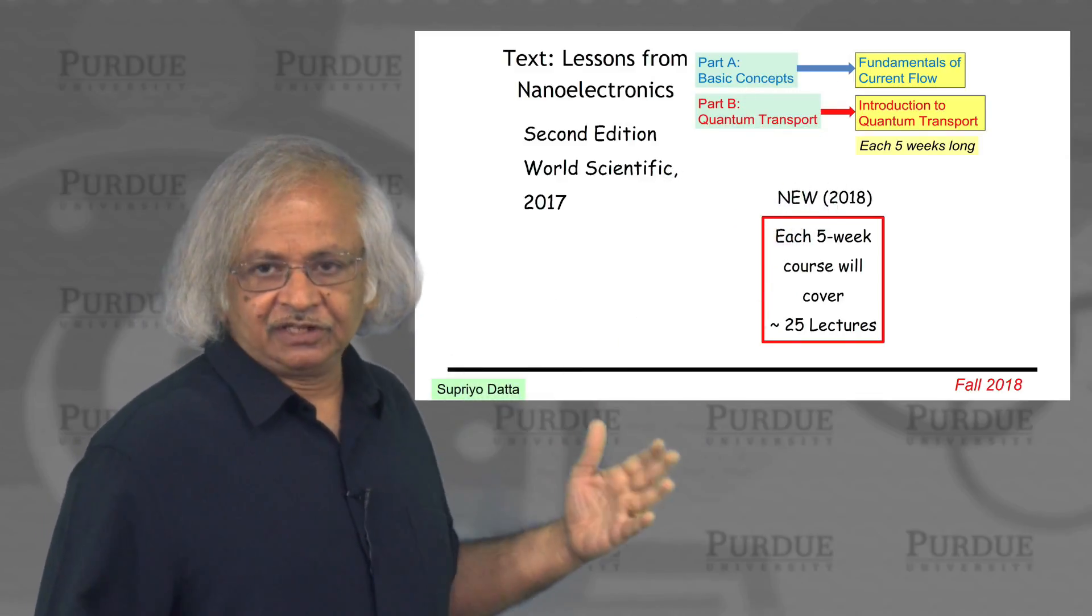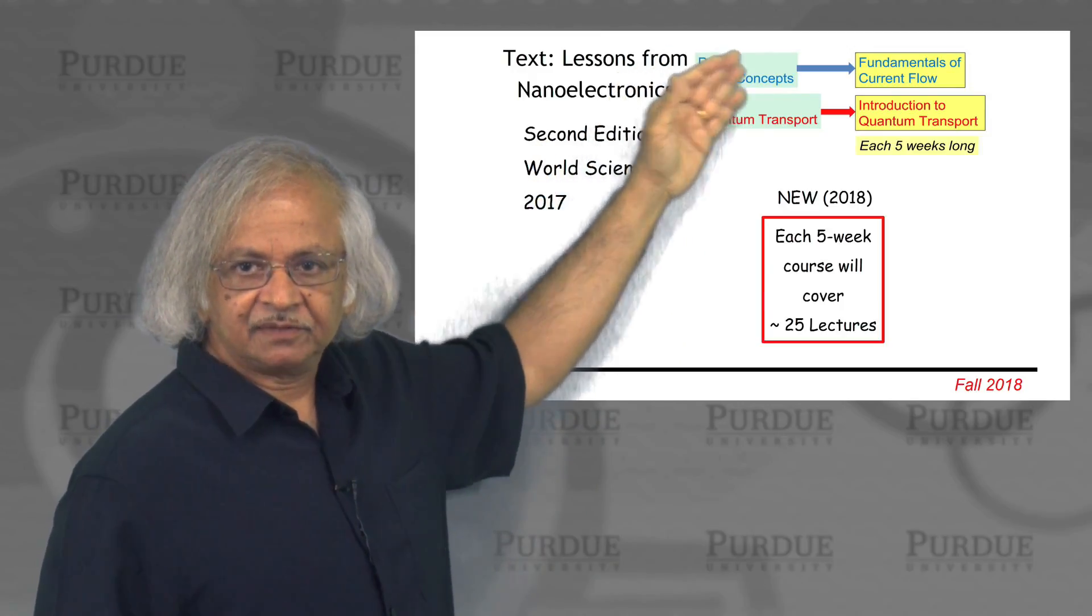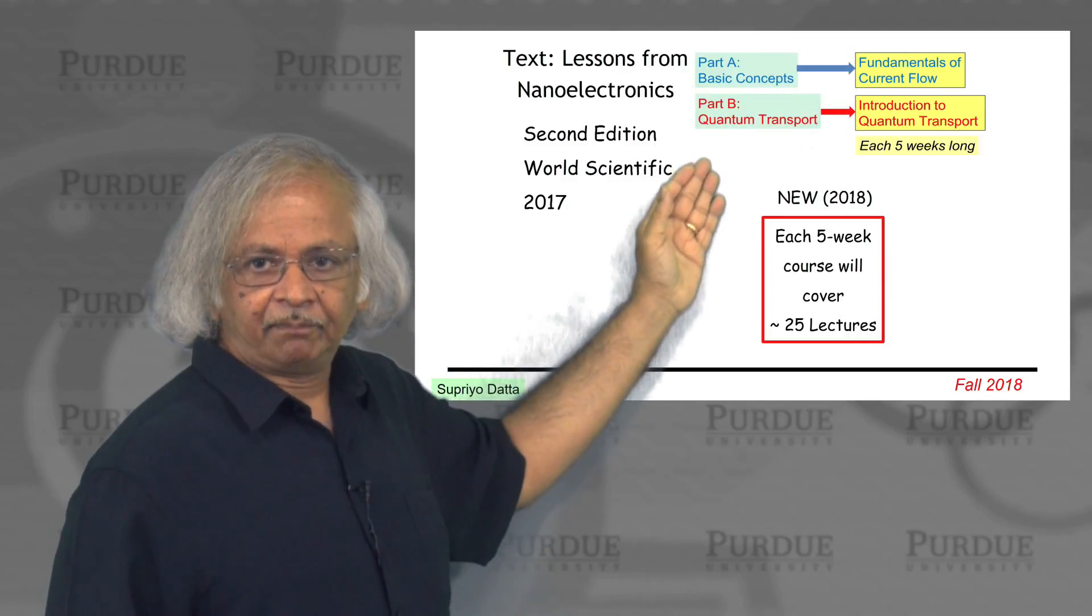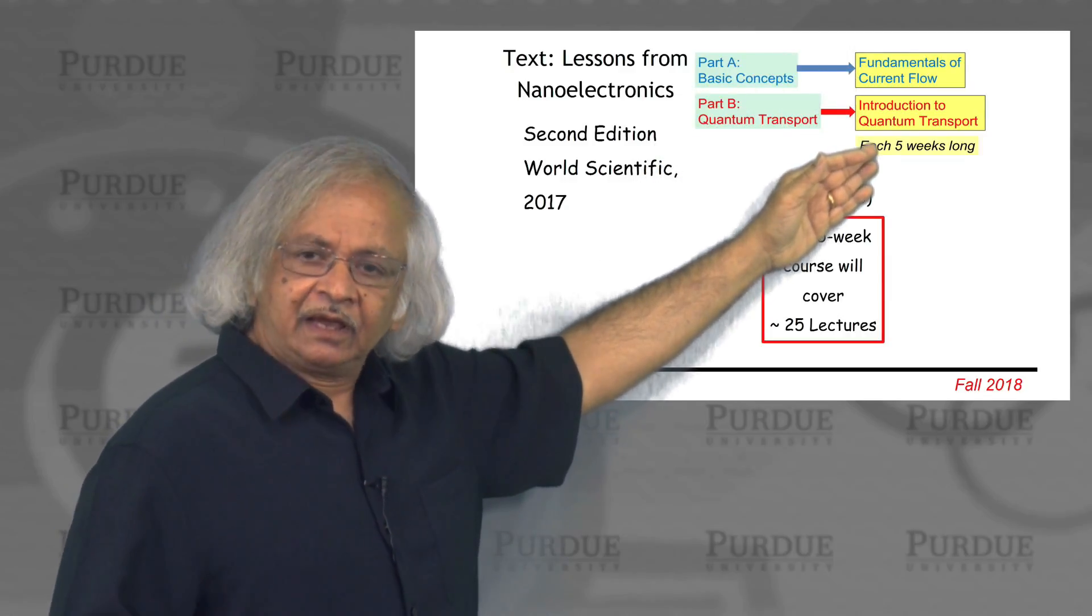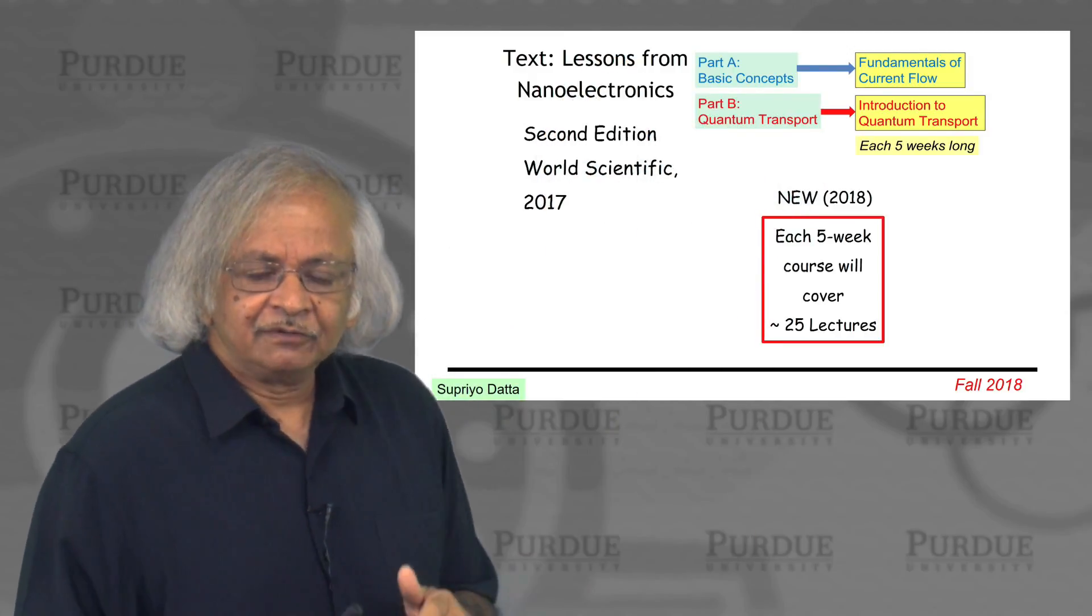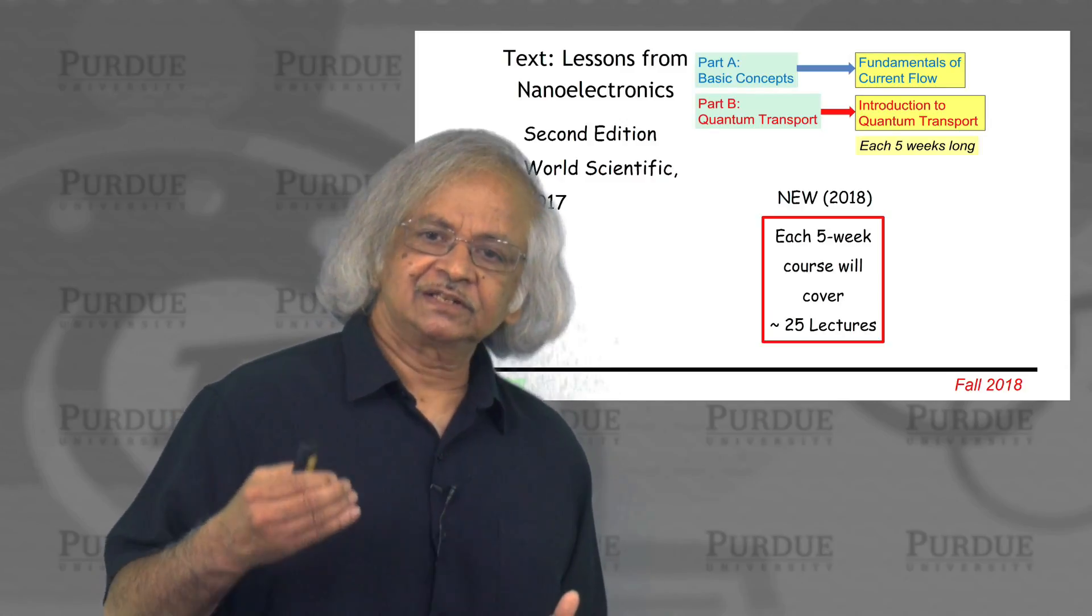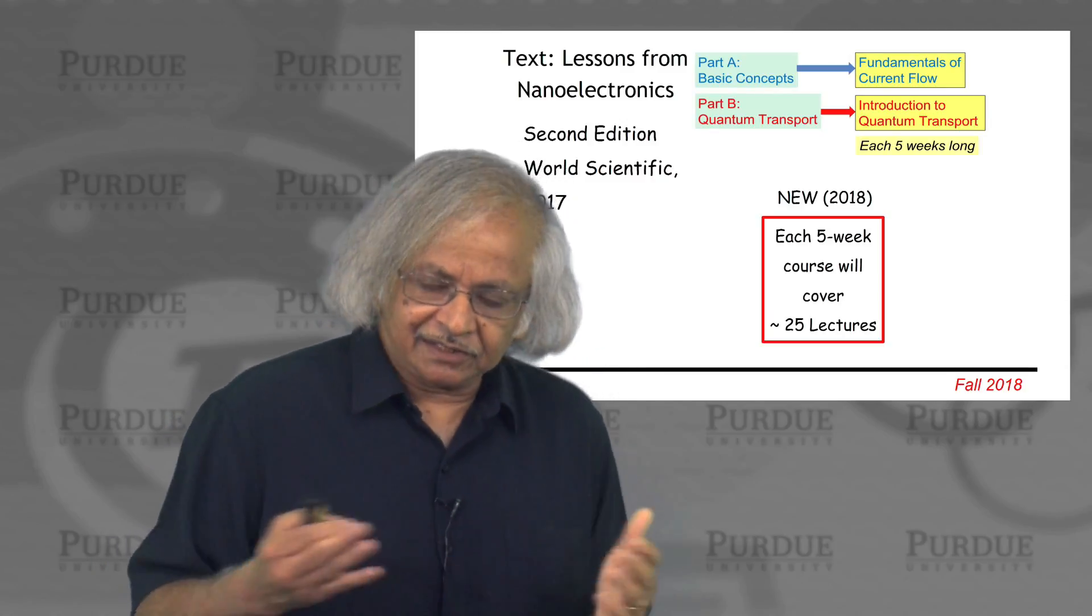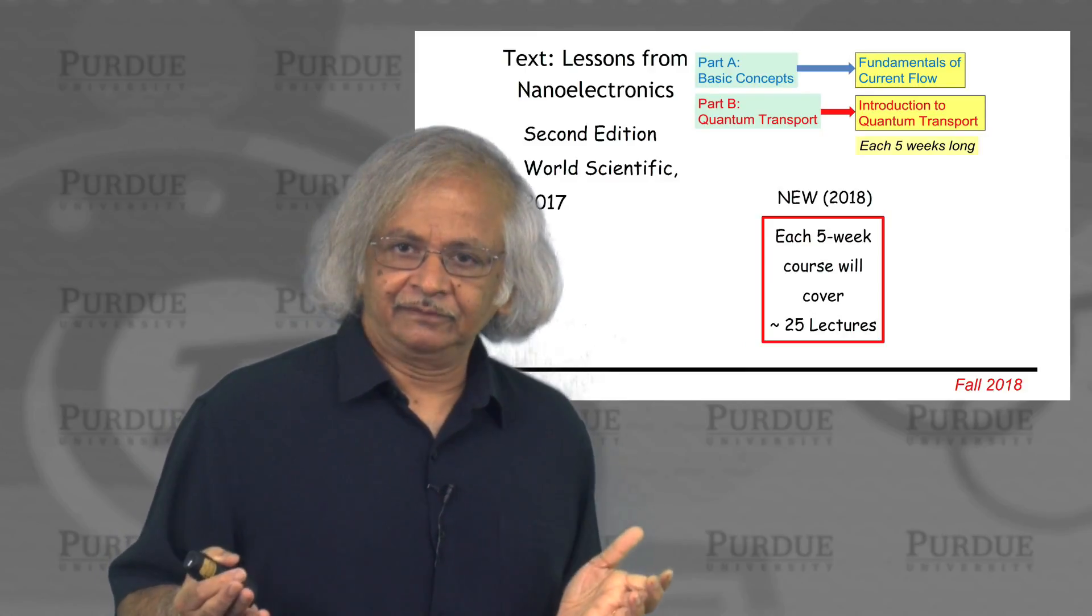The text for these courses have been published by World Scientific. This is part A, basic concepts, that goes with the first course. Part B, quantum transport, goes with the second one. What's different between the two? In the first course, we try to understand the basic concepts, thinking of electrons as particles. And it turns out that you can understand a lot of these basics quite well that way.